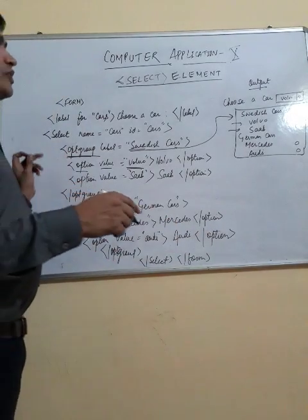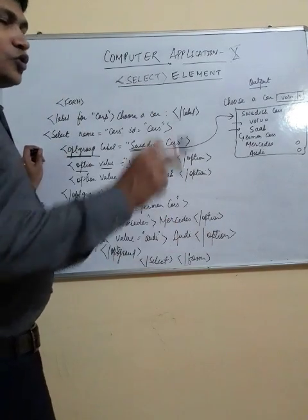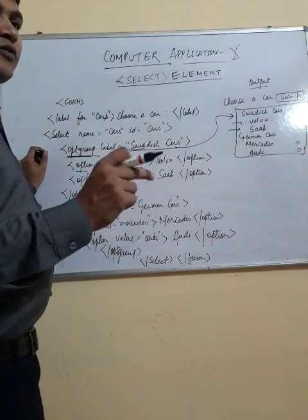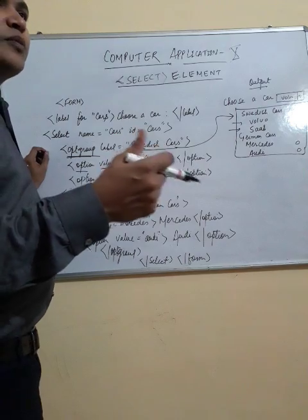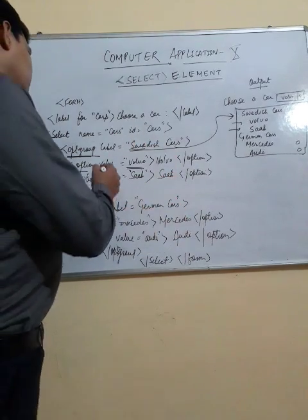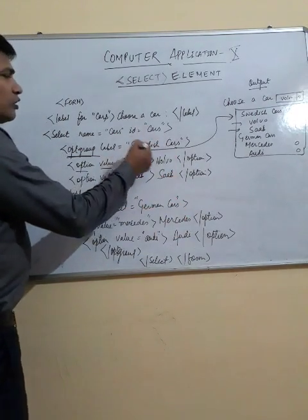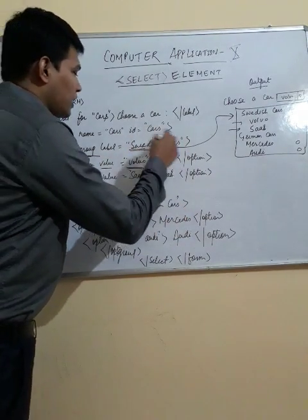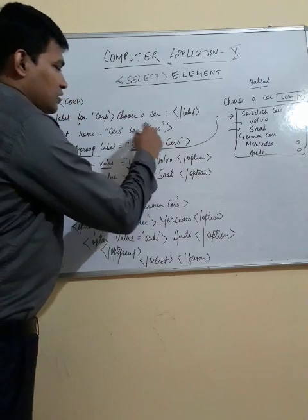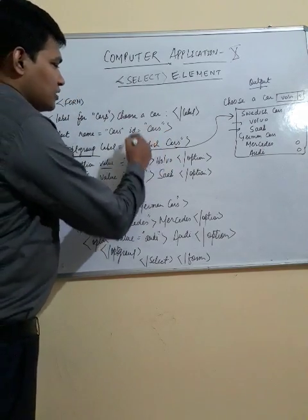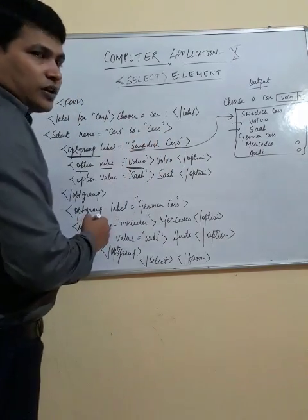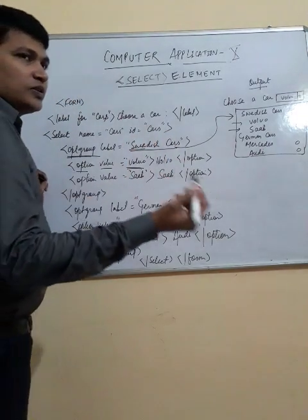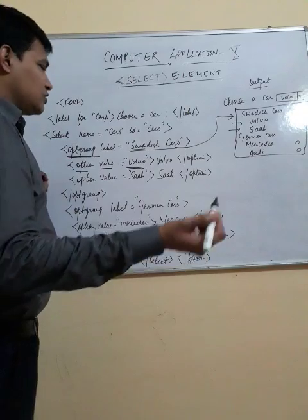For example, if you want to define a group of different companies of bikes, you can define the first group as Yamaha in the same way I defined the Swedish Car group. The bikes in that group would be, for example, the FZ and R15.